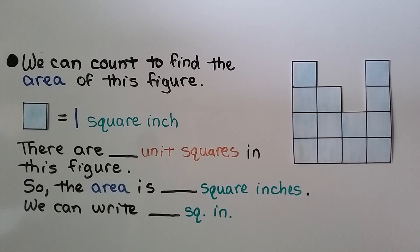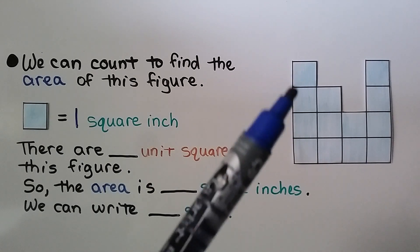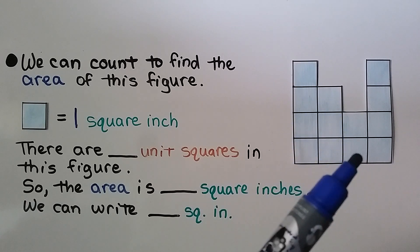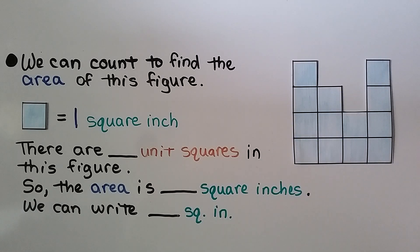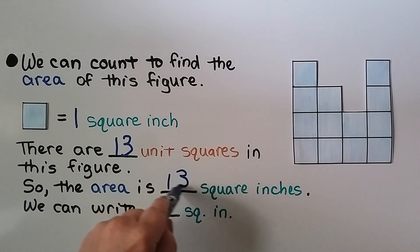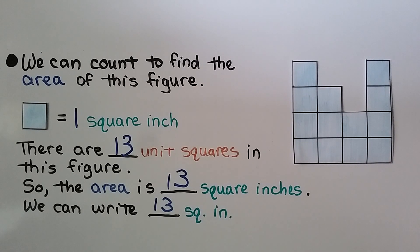We can count to find the area of a figure. Each square is equal to one square inch. We count each square: one, two, three, four, five, six, seven, eight, nine, ten, eleven, twelve, thirteen. There are thirteen unit squares in this figure, so the area is thirteen square inches. We can write that as 13 sq. in.